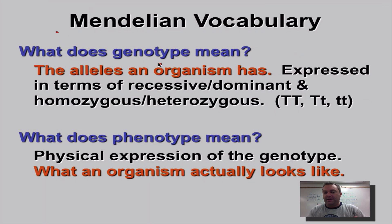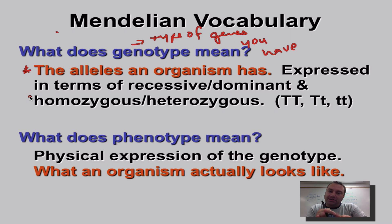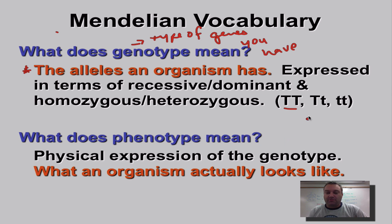Genotype basically refers to the type of genes you have. The book definition is the actual alleles that an individual has. Words like heterozygous, homozygous, dominant, and recessive are genotype words — they describe the genotype of an individual. So if I say someone is homozygous dominant, that means they have two big T's. If I say someone is heterozygous, that's big T, small T. And homozygous recessive means two small T's.